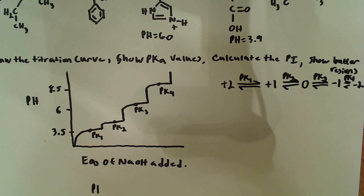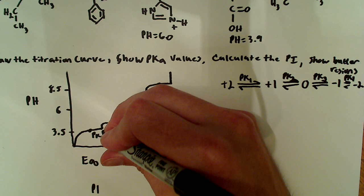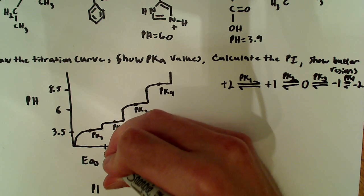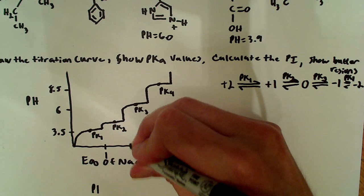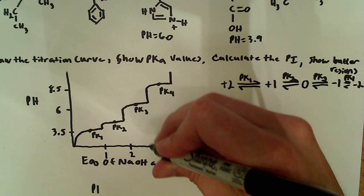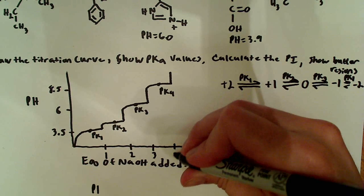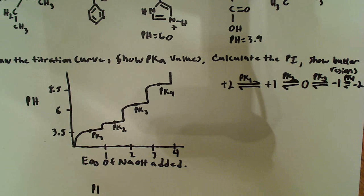So if we're going to say how many equivalents of NaOH added, we just look here at this point right here where we move to the next one, and we say that's one equivalent. This is two equivalents. This is three equivalents. And the final one over here is four equivalents of NaOH added. So that's our graph.